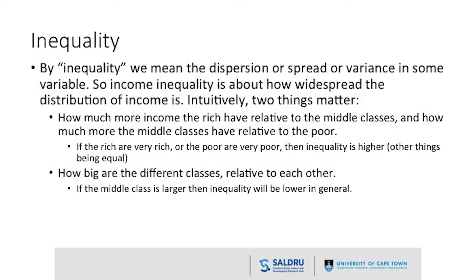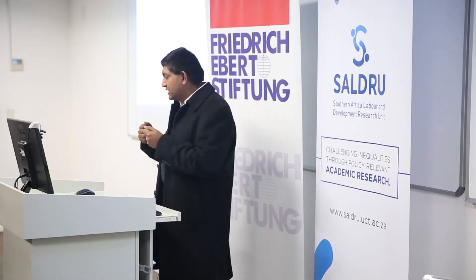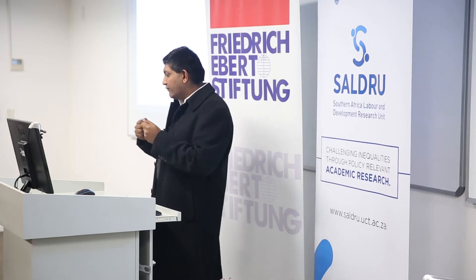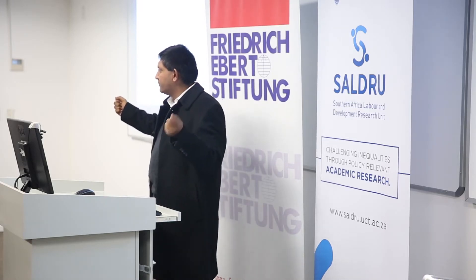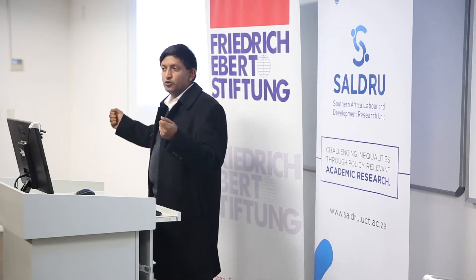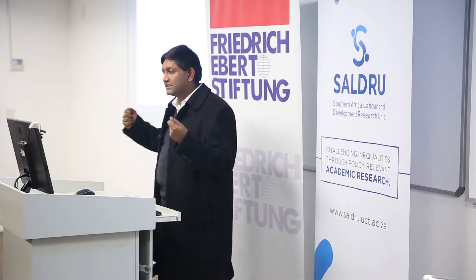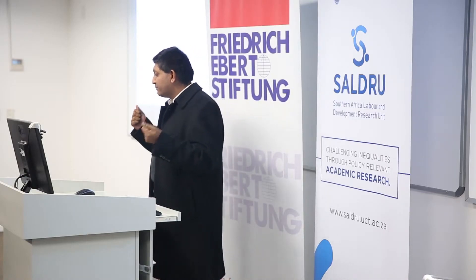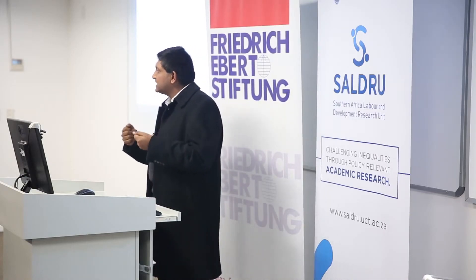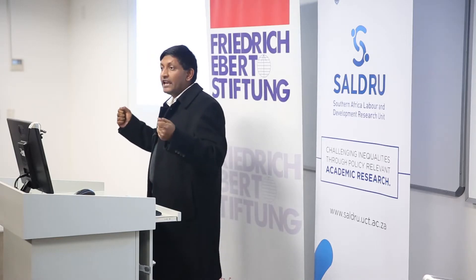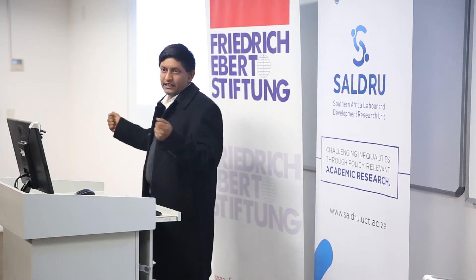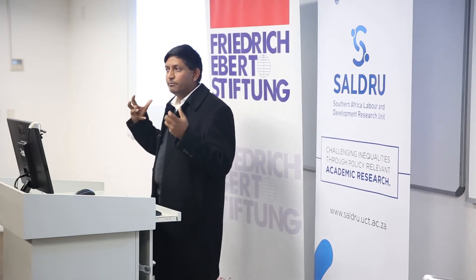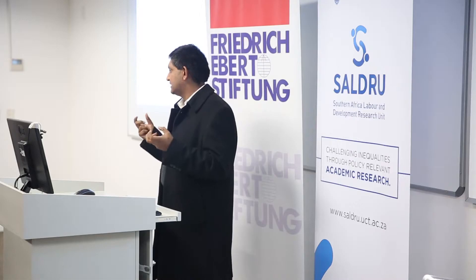By inequality, we mean the dispersion or spread — the variance — in some variable. By dispersion, we just mean how far apart are the different people or different groups. Variance is a statistical measure, but if you said that people are different, the question is: how many people are different and how far apart are they? Those are our two big dimensions.